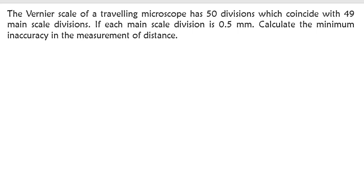The vernier scale of the traveling microscope has 50 divisions which coincide with 49 main divisions. Each of the main scale divisions is 0.5 millimeters. Calculate the minimum inaccuracy. Let's break down what we have. First of all, based on what we've been given, the main scale division is 0.5 millimeters.